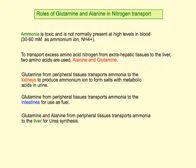A correction: ammonia is kept at levels of 30 to 60 millimolar — not micromolar. Regardless, it's kept at a low concentration because it's toxic. If you want to transport a nitrogen component in the body, you'll typically transport it on an amino acid, either glutamine or alanine.